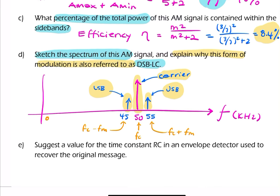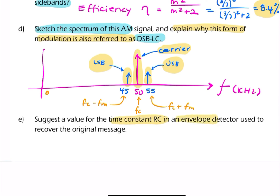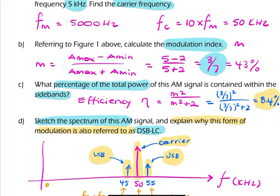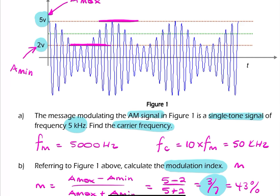The next part of the question says, suggest a value for the time constant for an envelope detector. So if we had an envelope detector, so if we had a diode and then a capacitor and a resistor, what is the suitable value for the time constant? The question isn't asking for component values, it's not asking for resistance values or capacitor values, but it wants to know what is a suitable product so that the envelope detector will be able to trace these peaks. So we want the capacitor to be able to discharge at a rate that allows this envelope here to be traced suitably.